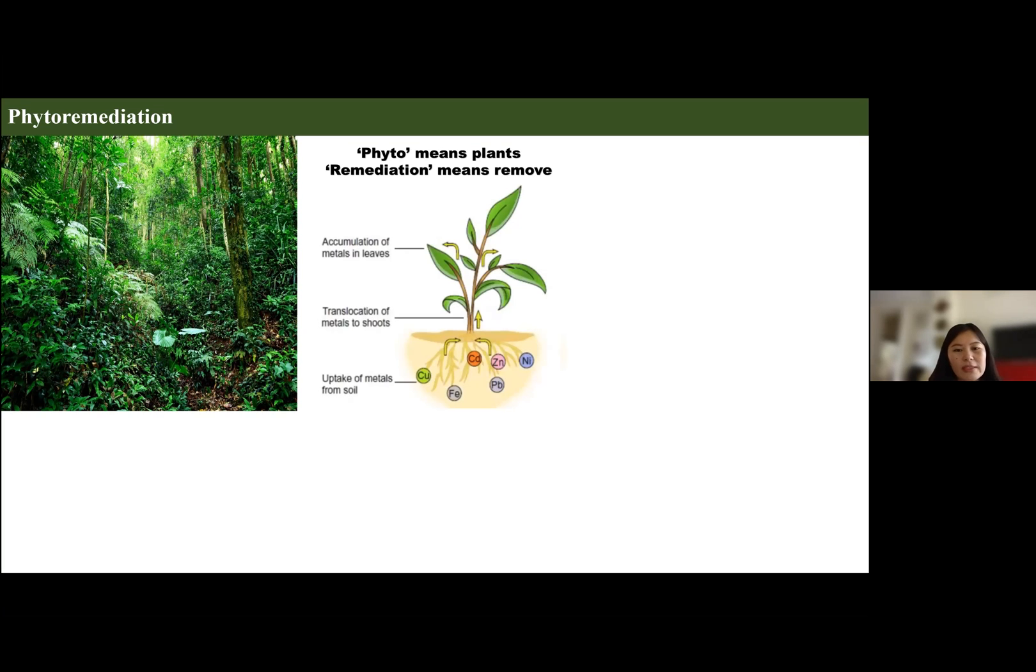But how does it happen? The plants target and absorb the contaminants, especially heavy metals from soil and water, then transfer these contaminants to the plant tissues. Later, this biomass is harvested and treated.